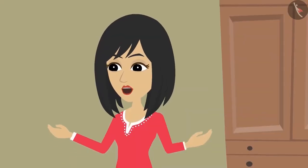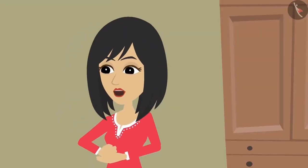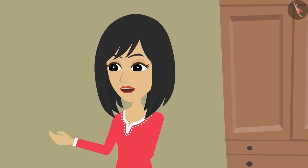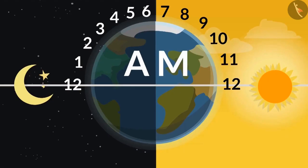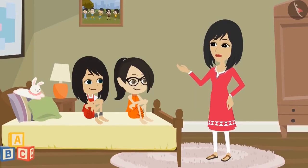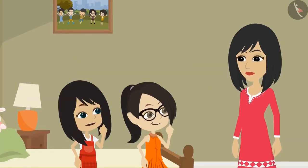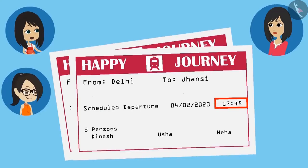Now I understand why you are confused — I will clear your confusion. Tell me, how many hours are there in a day? There are 24 hours in one day. Absolutely correct, Vandana. There are two ways to write those 24 hours. One way is to write a.m. or p.m. along with the time, and the second way is to write the time according to the 24 hours. So does this mean that this is written in the 24 hours format?